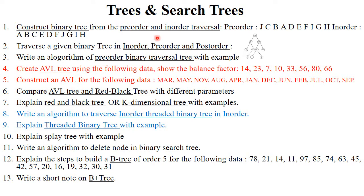The next topic is trees and search trees. They will give particular examples where you need to find in-order, pre-order, and post-order traversals. The next topic is AVL tree — they will give examples in string or number format and you need to create the AVL tree. Next, compare AVL tree and red-black tree, or explain red-black tree with examples, or k-dimensional tree with examples — all for six to eight marks. The most important topic is threaded binary tree — they will compulsorily ask to write an algorithm to traverse an in-order threaded binary tree, or explain threaded binary tree with examples for eight marks. Also prepare splay tree, B+ tree, and B- tree with examples.